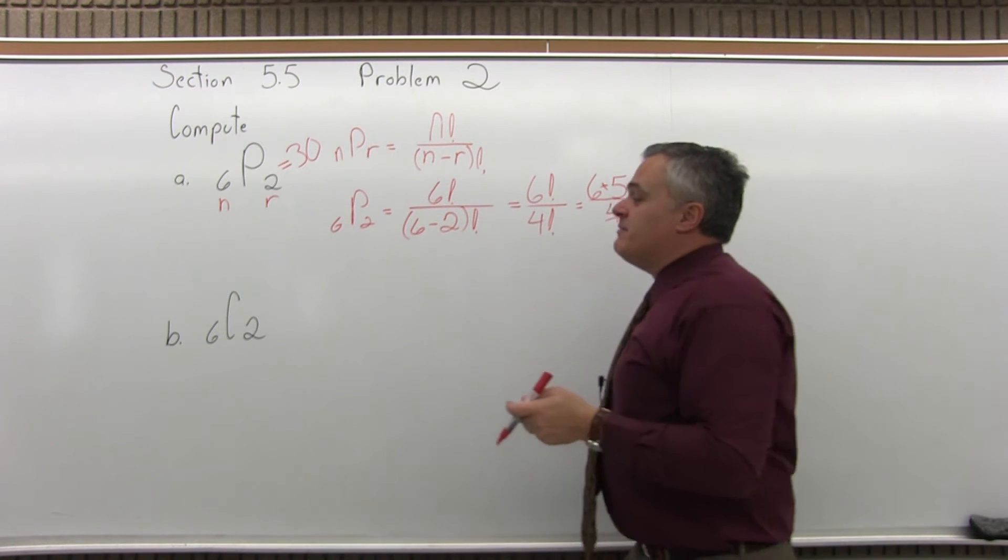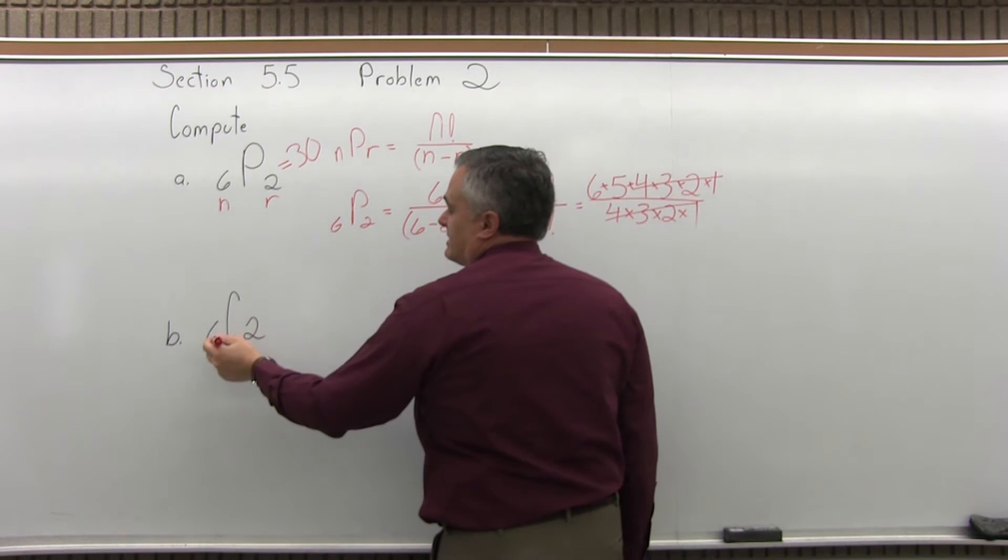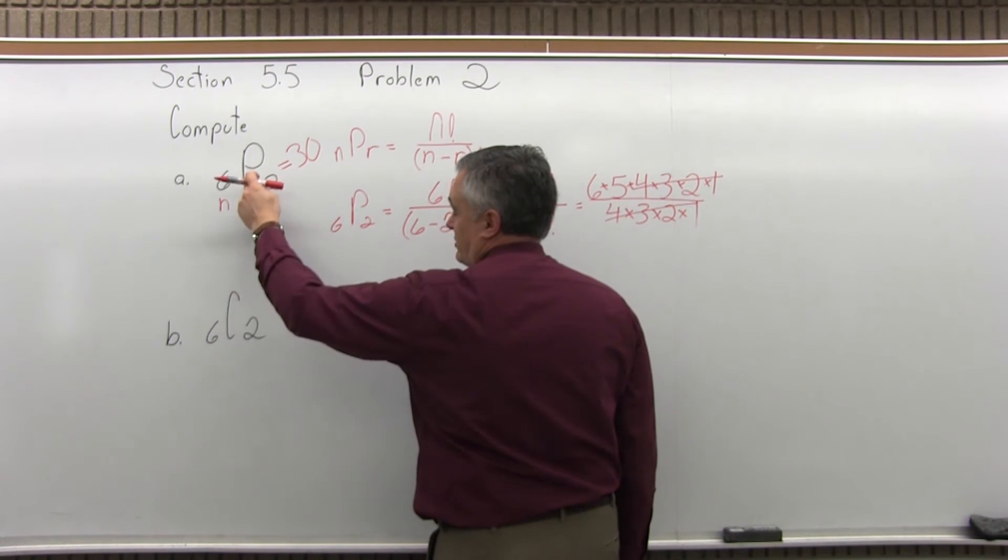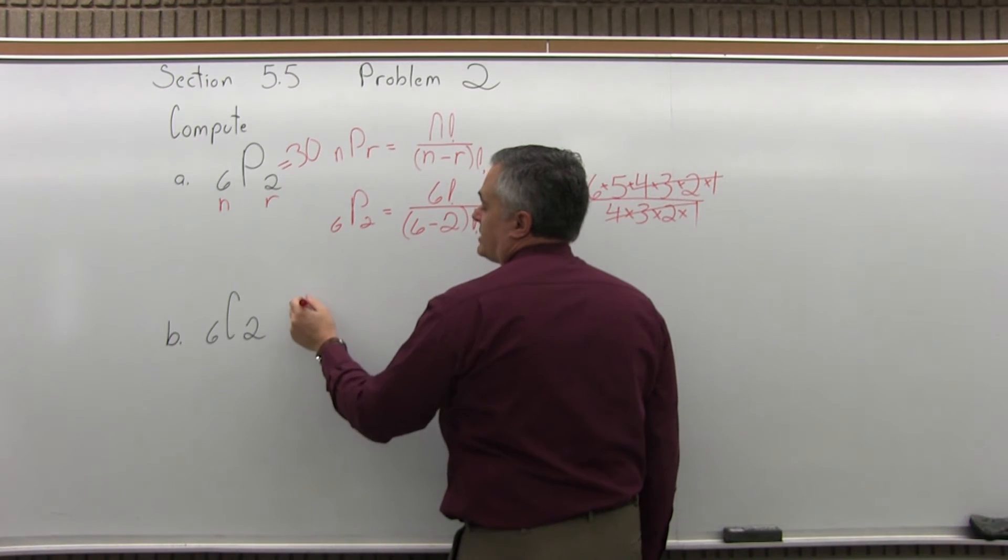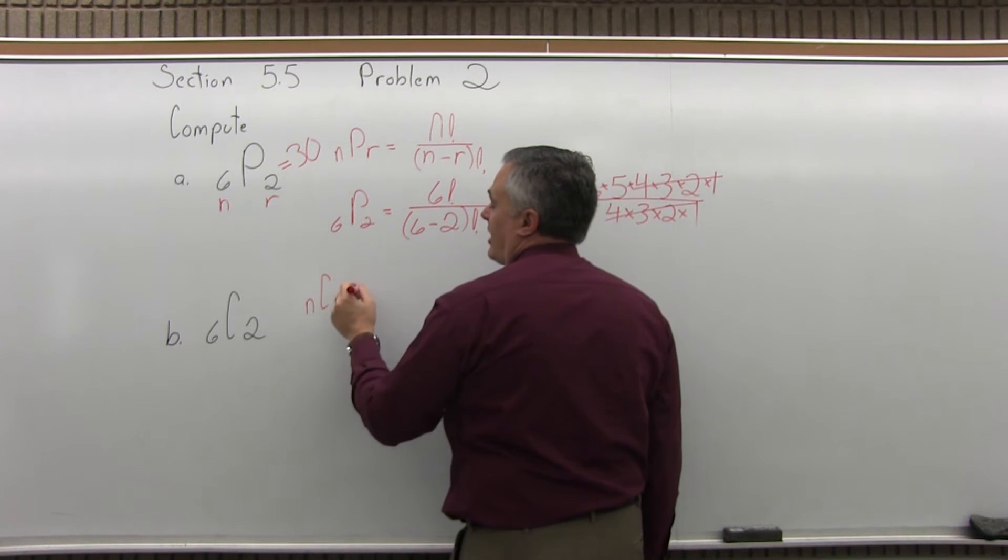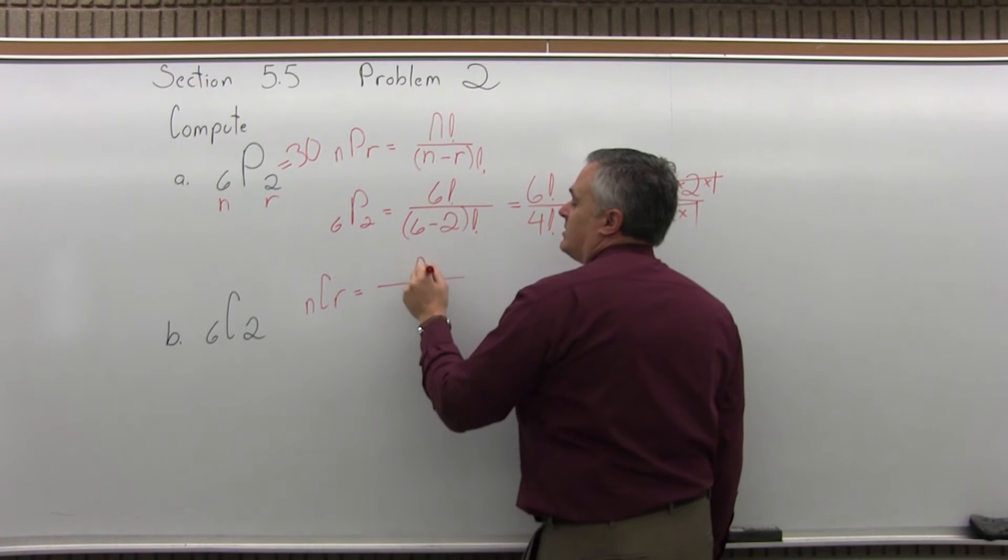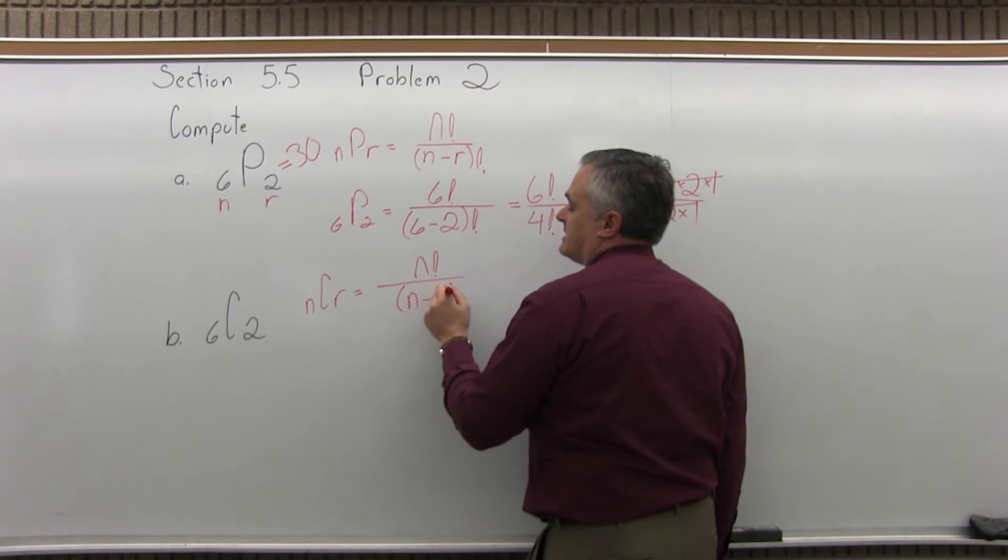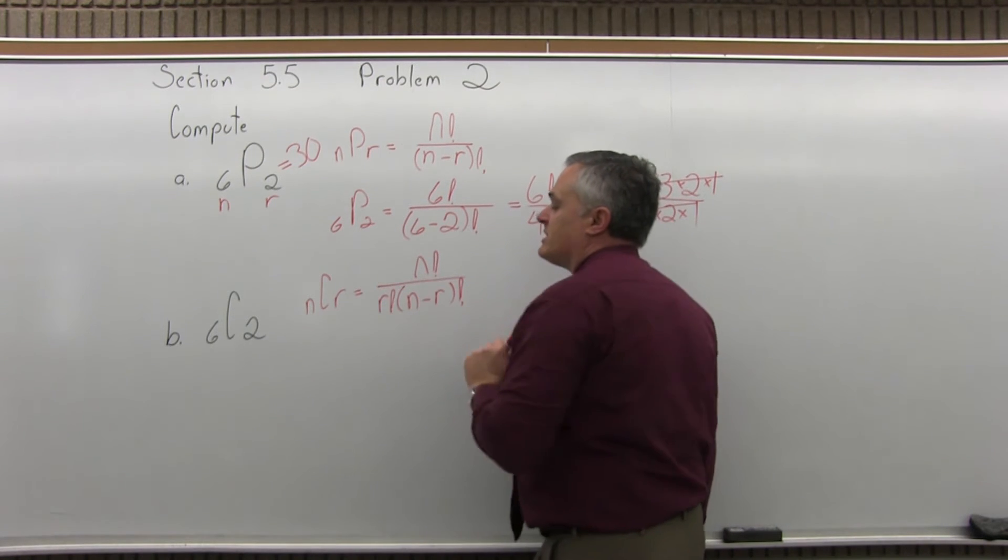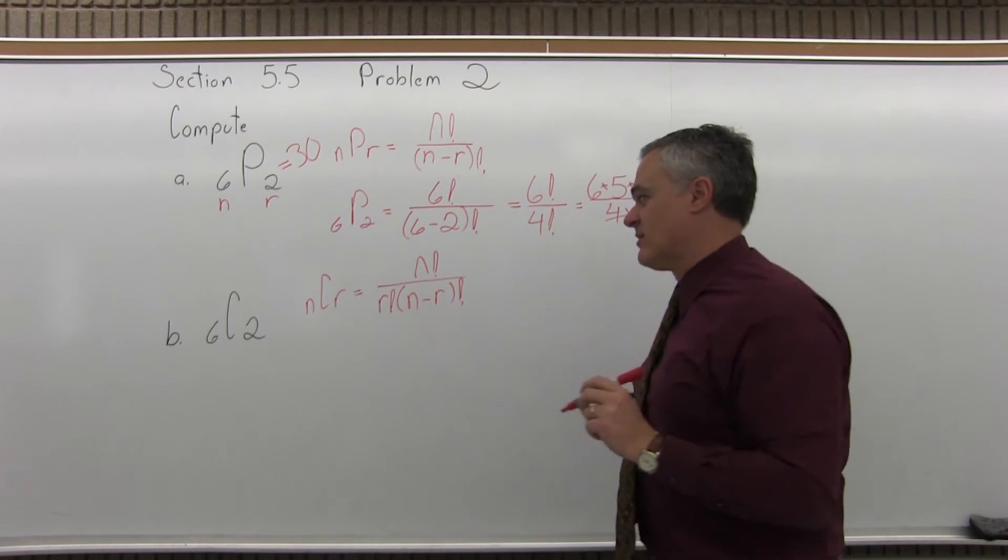Now, part B is 6 combination 2. Permutation, combination, a little different. The formula for combination, n combination r, is almost the same. It's n factorial over n minus r in parentheses factorial. But the difference is, in front of the parentheses in the denominator, you have an r factorial.